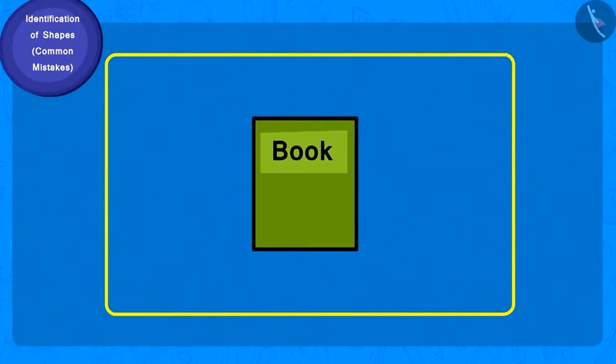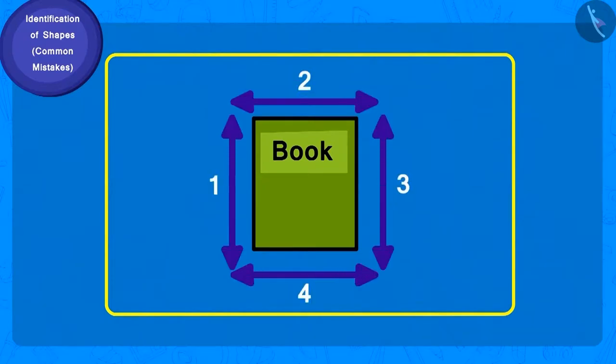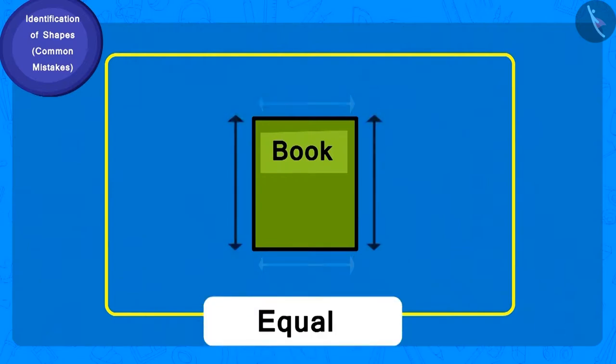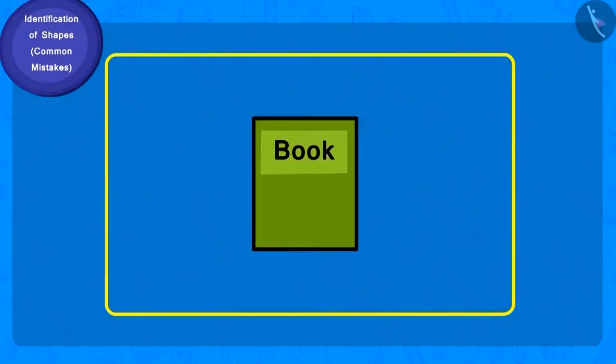Let us look at the book showed by Chacha. How many sides does the book have? And how many corners? Four. But is the length of all the sides of the book equal? No. Only the length of the opposite sides is the same.